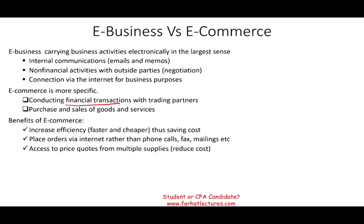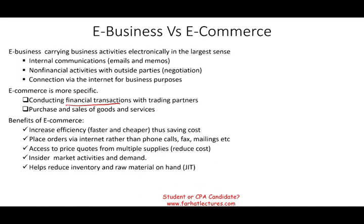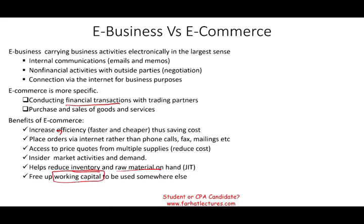You have access to price quotes from multiple suppliers. If you're a manufacturer looking at suppliers, you can check pricing quotes from many suppliers to reduce costs. You'll have inside market information and demand data to plan your business properly. This helps reduce inventory and raw materials — this is where just-in-time inventory comes in. Handling inventory is a cost. All these activities increase efficiency: doing the same thing faster at a lower cost, freeing up working capital.